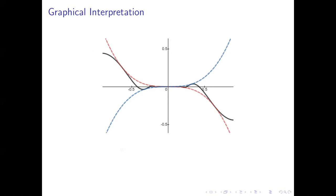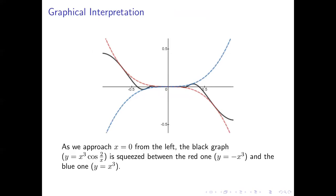Here's a graphical interpretation of what we just found. The red graph is y = -x³, the blue graph is y = x³, and in black in the middle we have y = x³·cos(2/x). You can see it too is getting squeezed closer and closer to (0, 0) as x gets closer to 0.